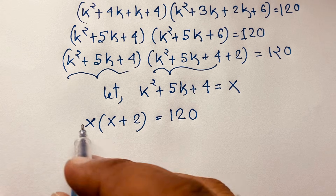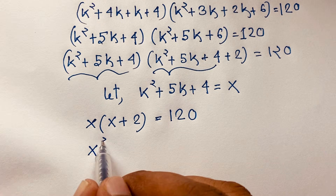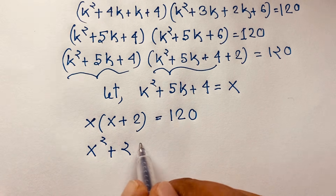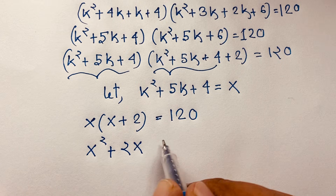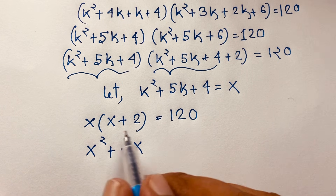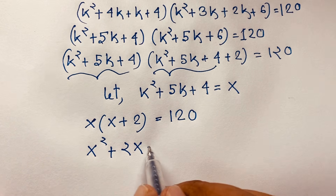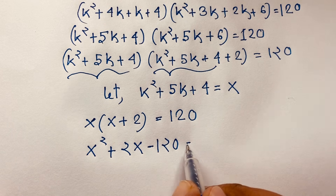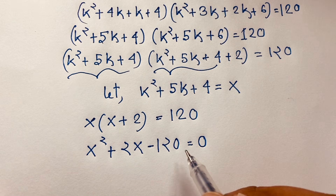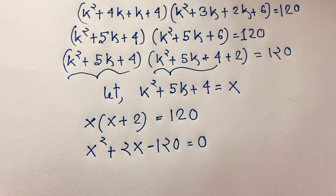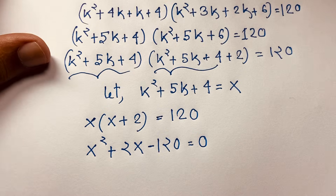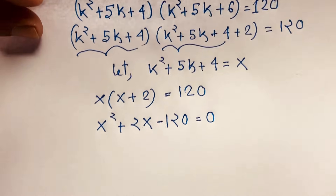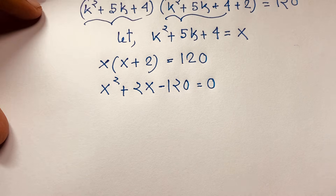Expanding x(x+2): x times x is x², and 2 times x is 2x. Moving 120 to this side gives negative 120. So we get a nice quadratic equation: x² + 2x - 120 = 0.